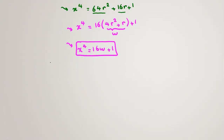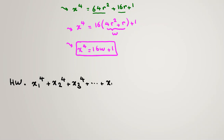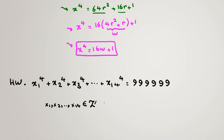Here is a homework problem for you: x₁ to the 4 plus x₂ to the 4 plus x₃ to the 4, all the way to x₁₄ to the 4, equals 99999999, where x₁, x₂, through x₁₄ are integers. Find what x₁, x₂, through x₁₄ are. Solve this and comment your answer with a proof below this video.